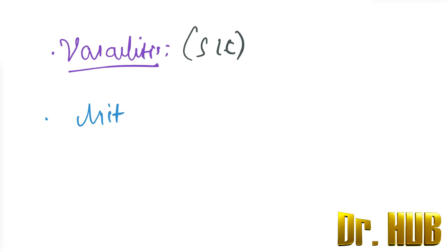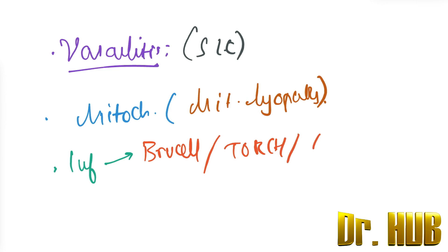Then comes the mitochondrial disorders, so mitochondrial myopathy is present. Then comes the infections. Under infections there is brucellosis, there can be presence of TORCH, EBV, as well as HIV.